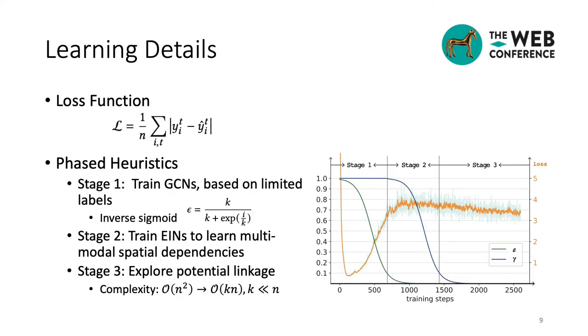Before introducing the phased heuristics, we first report our loss function selection, which is L1 loss. Now, let's see how the phased heuristics work.